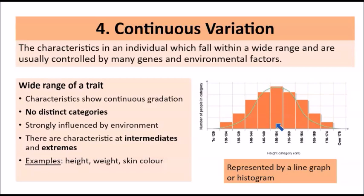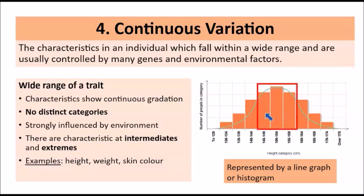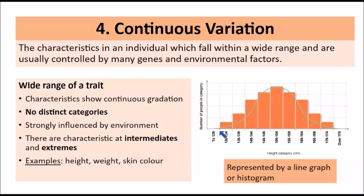These can be represented on a line graph or histogram — the two options for representing continuous variation on a graph. The line graph is shown as a curve and the histogram as bars. Looking at the trait of height in this graph, in a population there's a wide range of heights — from the shortest individuals at one end to the tallest individuals at the other end, representing the extremes. In the middle region you have the intermediate heights, and you tend to find more people falling in the intermediate categories. Always remember with continuous variation: think of a wide range of a particular trait with intermediates in the middle and extremes at either end.